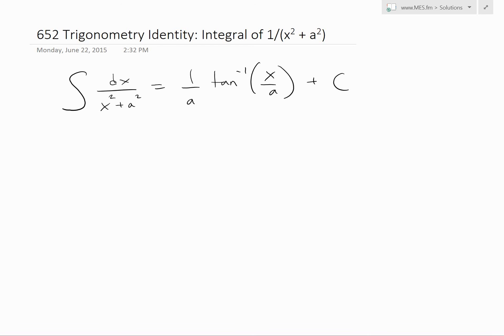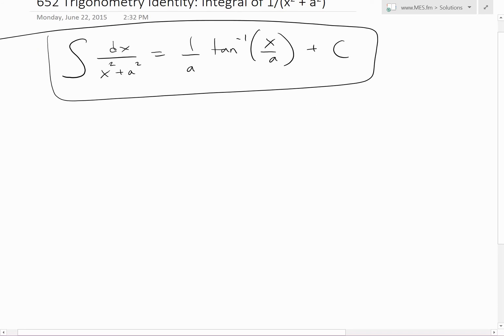We're going to discuss a trigonometry identity. Look at this identity: the integral of 1 over x squared plus a squared dx, and show that it equals 1 divided by a times the inverse tan of x over a plus a constant.